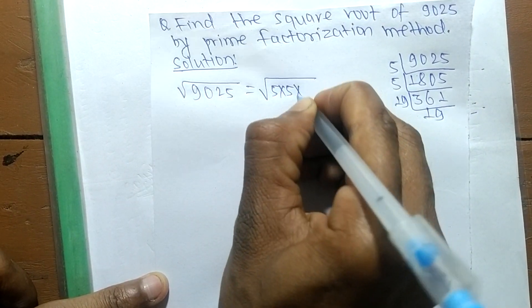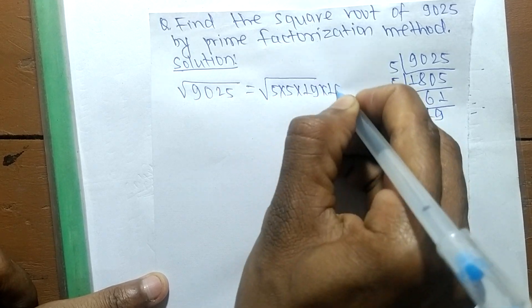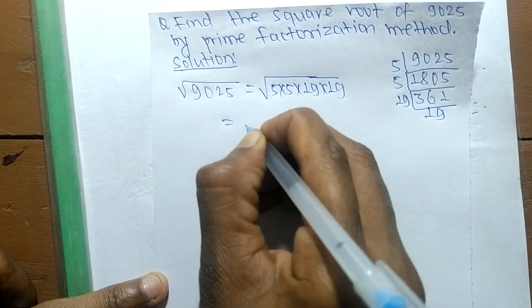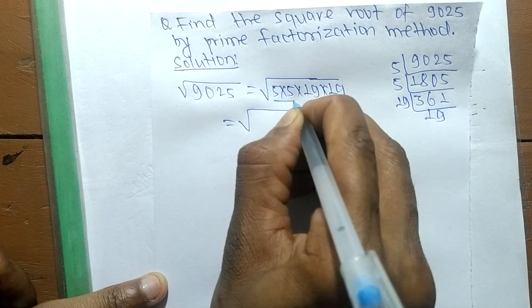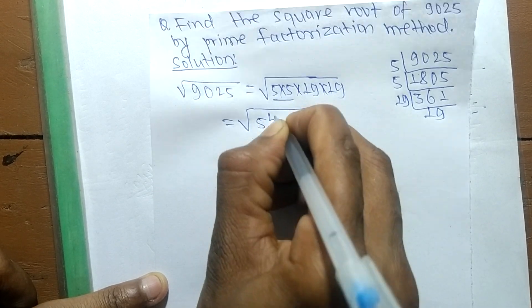5 × 5 × 19 × 19. This is equal to 5 × 5, which is 5 squared, and 19 × 19, which is 19 squared.